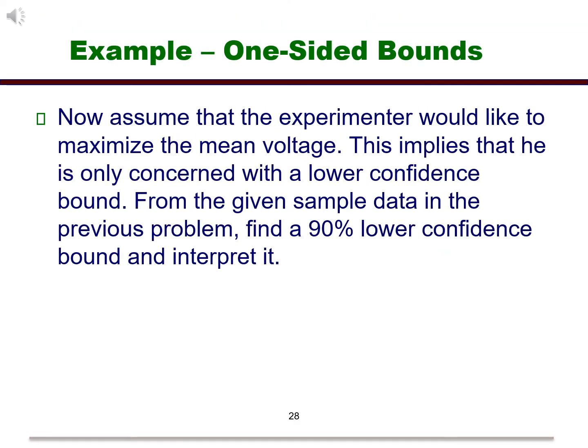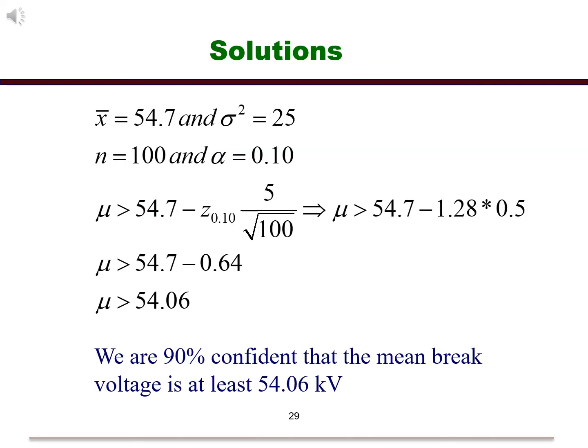Let's go back to the voltage example. Now assume that we are only interested in the lower confidence bound. Now let's finish the problem and interpret the bound. Here are the solutions. Notice that since this is a lower bound, we have a greater than sign.